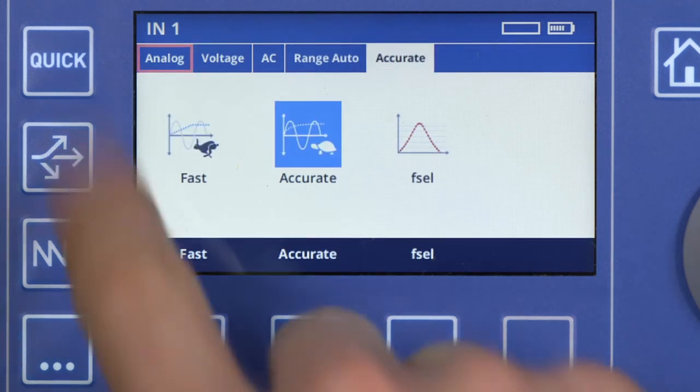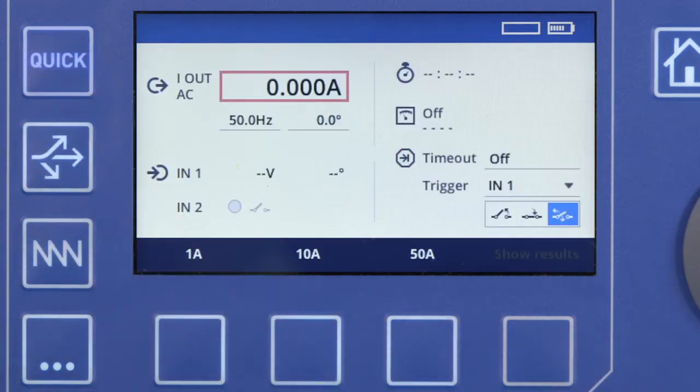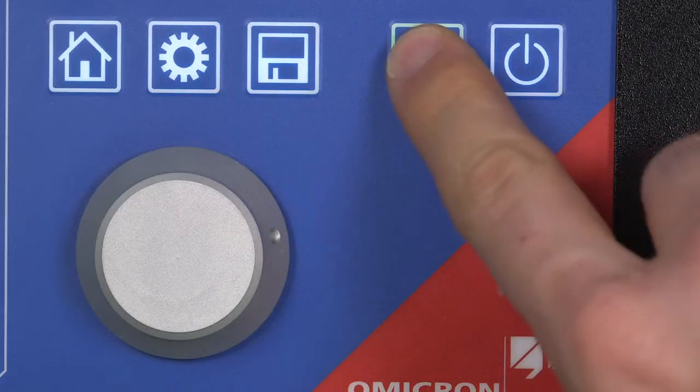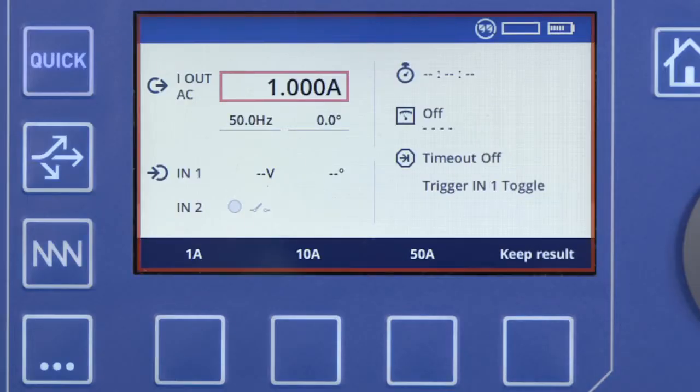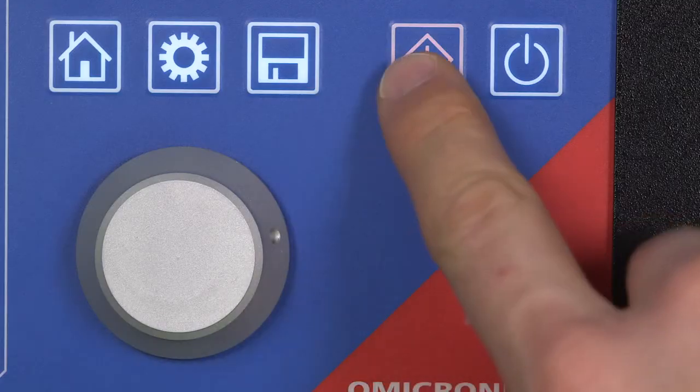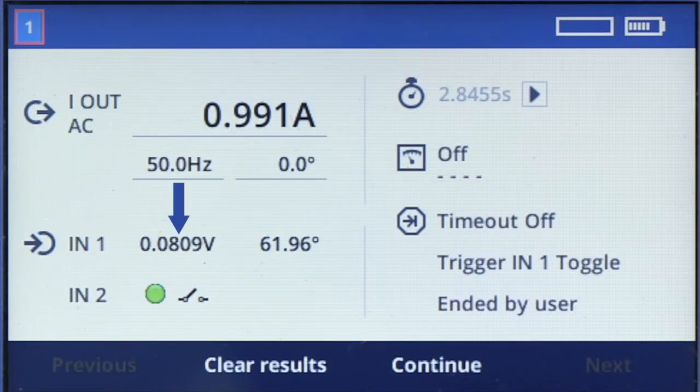Please verify that the CT's secondary loop is closed by injecting 1A for a few seconds. Now you should be able to see a few millivolts at IN1. If the value is above 1 volt, please stop the test and check the wiring as the CT's secondary side might be open.